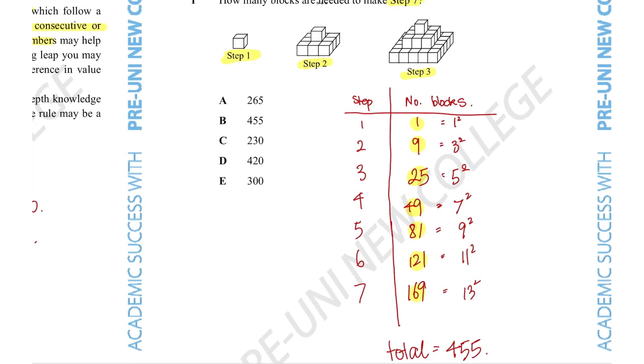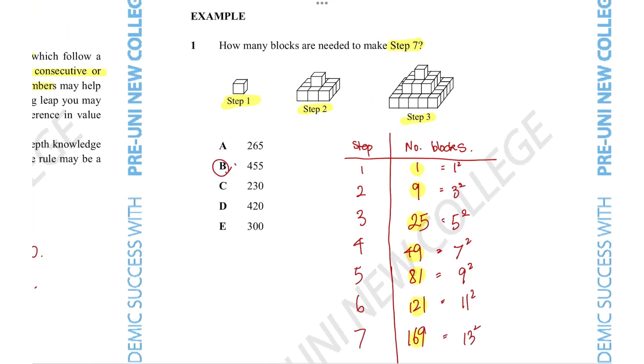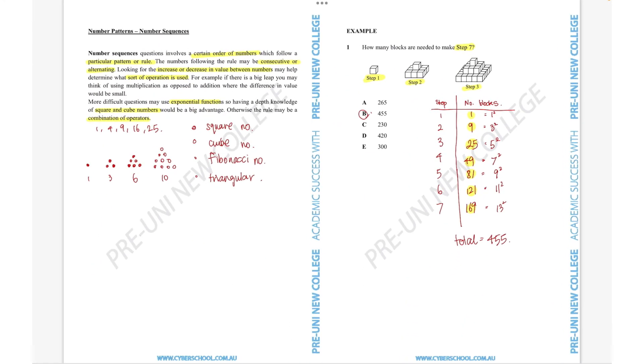So the correct answer is option B. What we learned here is that it's really important to be able to recognize what the pattern is in the question, which allows us to figure out the answer. As long as we figure out the pattern by looking at how the numbers are changing—in this case, it was increasing by odd numbers that were being squared—that led us to the correct answer. That's the general strategy to answer these types of questions.